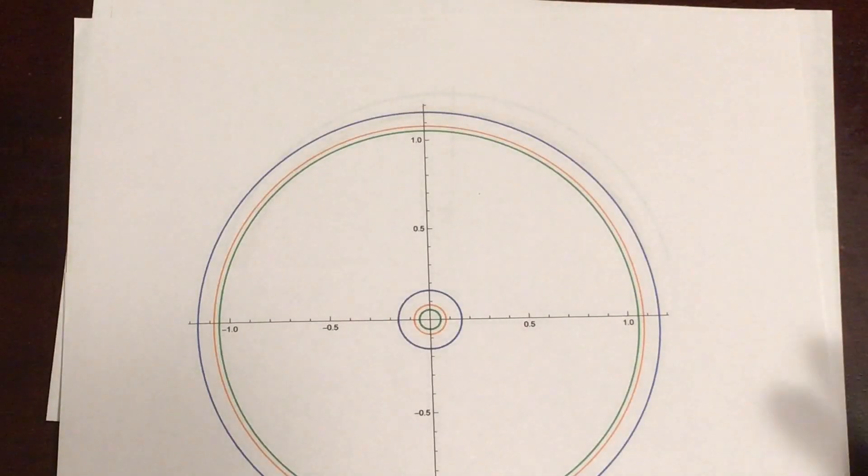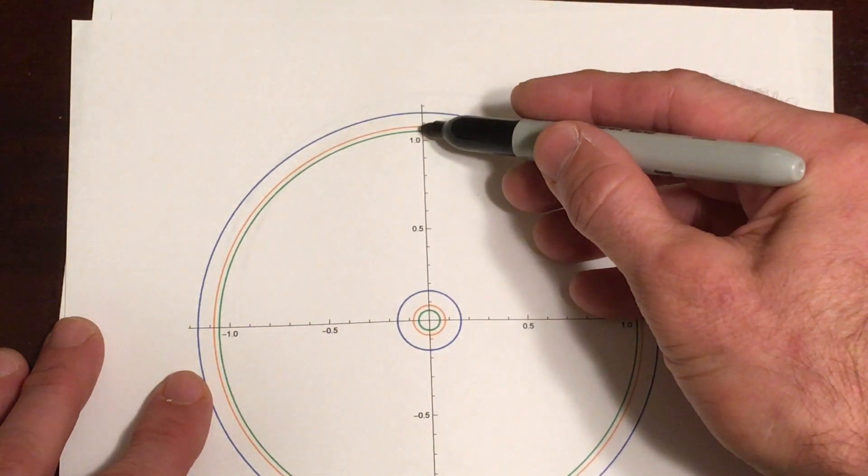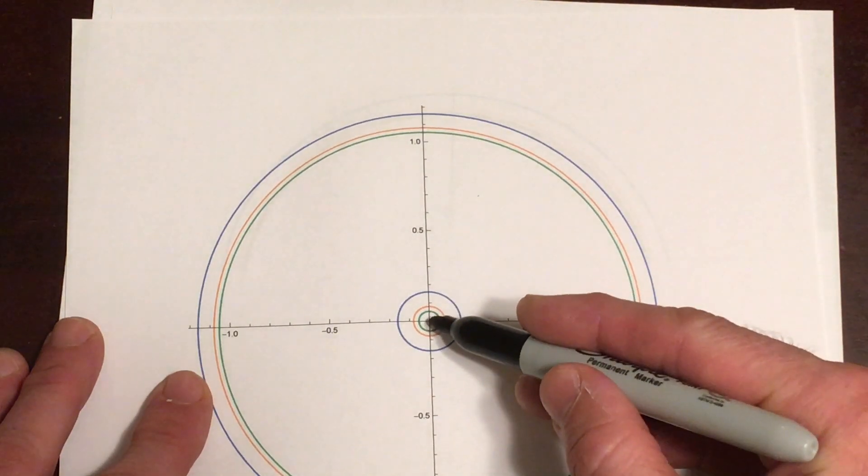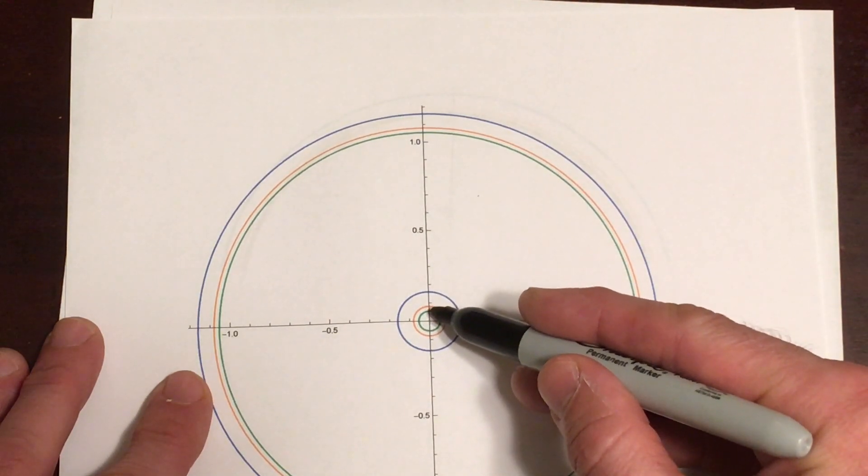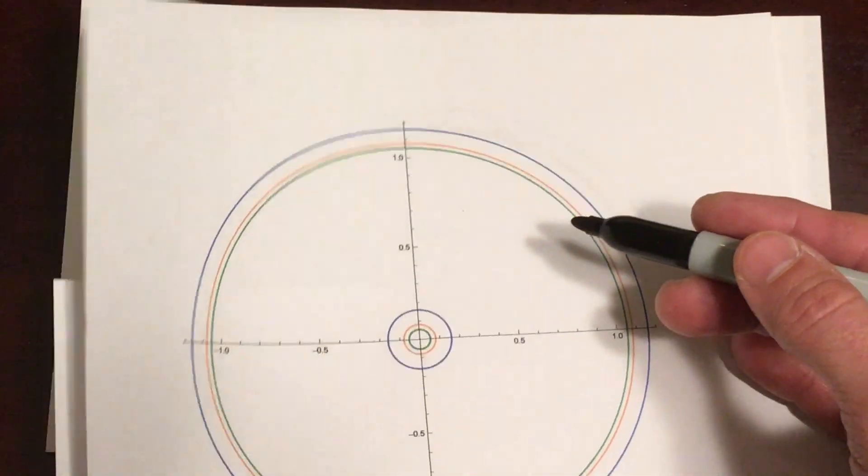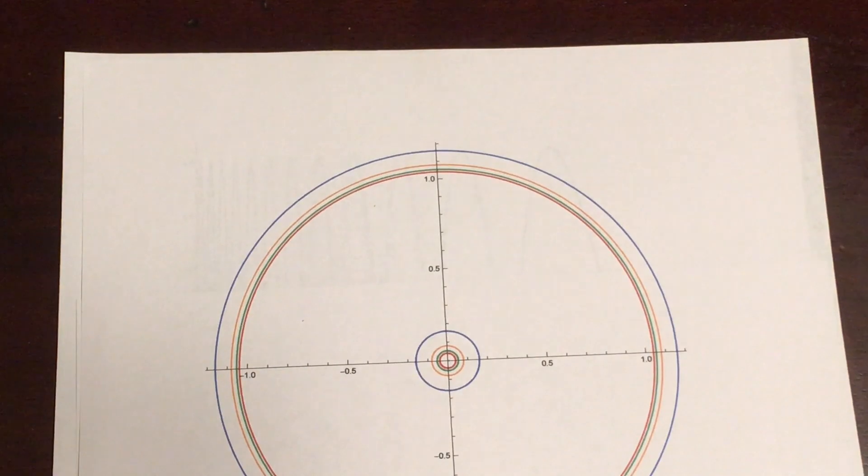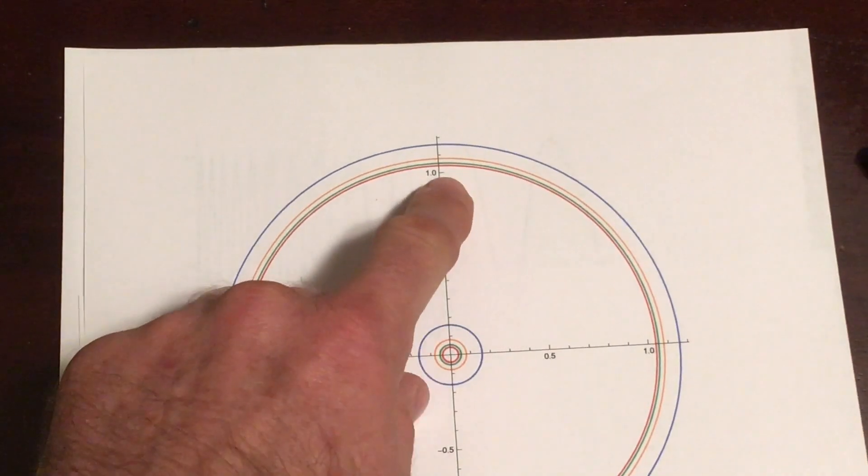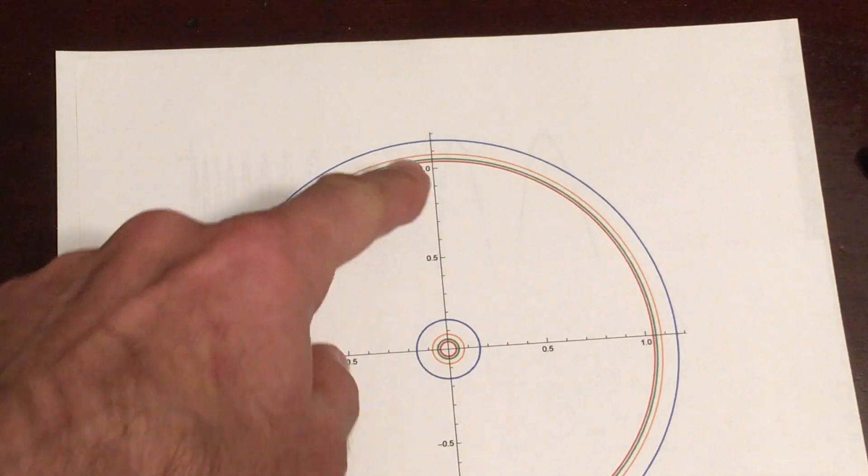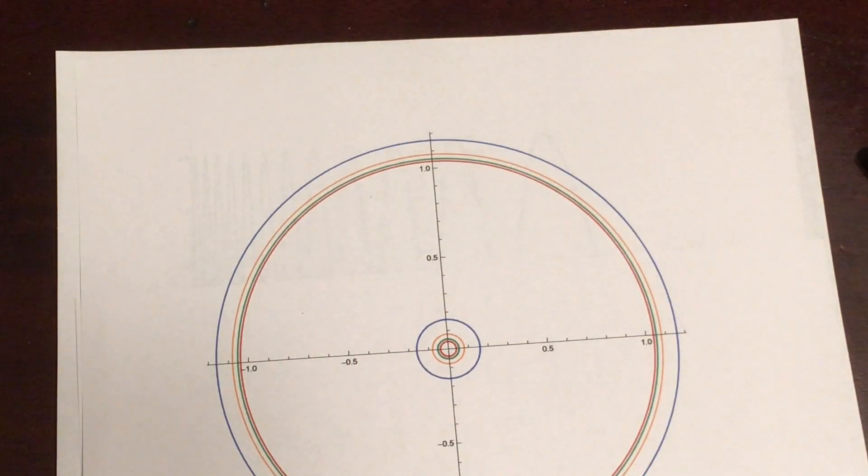And similarly, for three times around, that's what this green one is. This inner green circle has a circumference of one-third, so if we go around three times, exactly three times, we end up on the green circle. And similarly, for four times around, this red circle, we go four times around. So we see these finer and finer rings getting closer and closer to a radius of one around the south pole, and there's infinitely many of these rings.